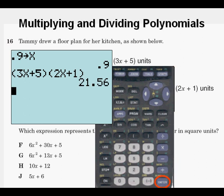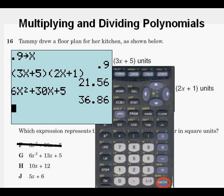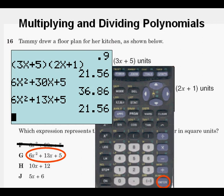We get a value of 21.56. So we're going to try these answers and see which one also gives us a value of 21.56. So we enter this first expression for F and we get 36.86. Not correct. We cross it out. Go on to the next one, choice G. We press enter and we get 21.56 which is the same as the original expression we put in. Since they're both the same, that is our answer.